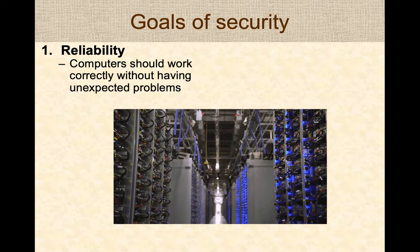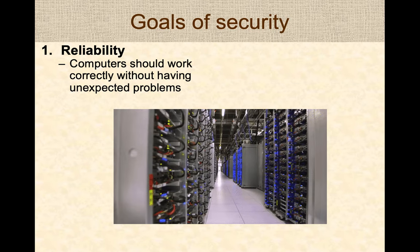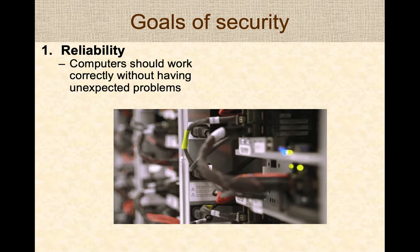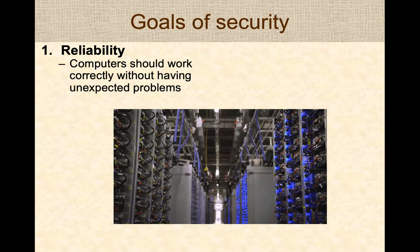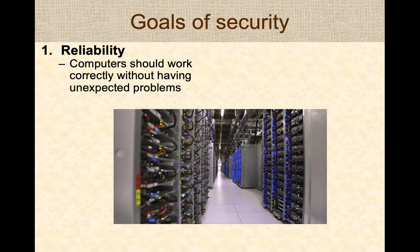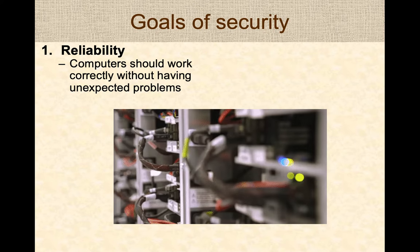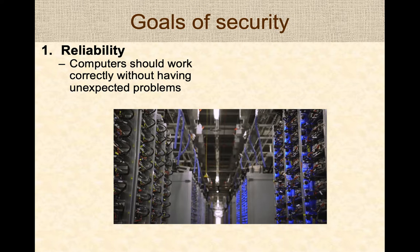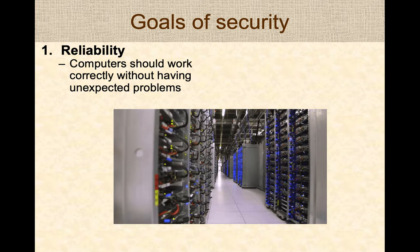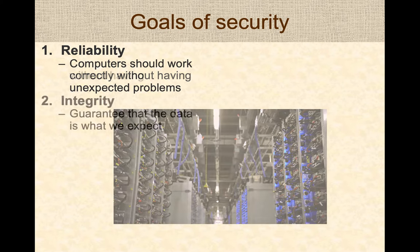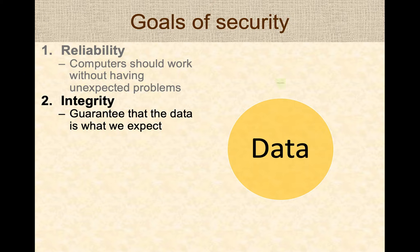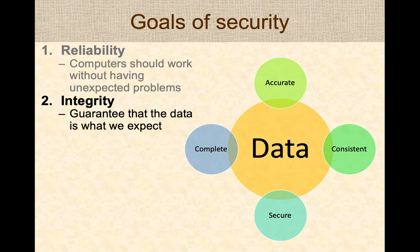The first goal of security is to ensure high reliability. Security tries to ensure that computers work and operate correctly and don't have unexpected problems or experience issues preventing them from operating correctly, or worse, operating incorrectly, causing failure or even loss of life in some cases. The second goal is to ensure that data is correct, accurate, and consistent so that when information is being processed or exchanged, the integrity of the data is maintained and preserved.